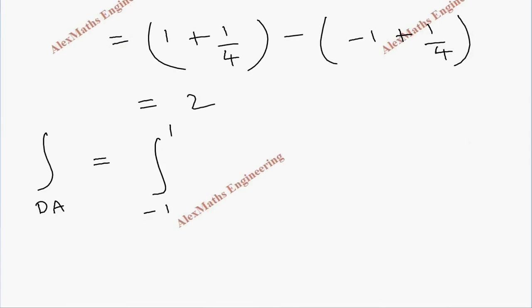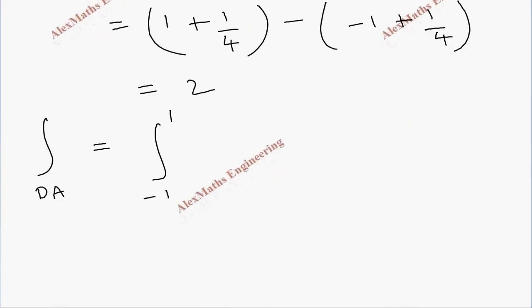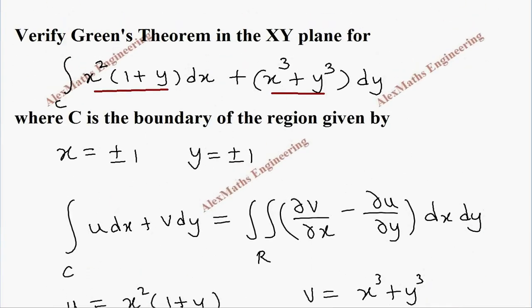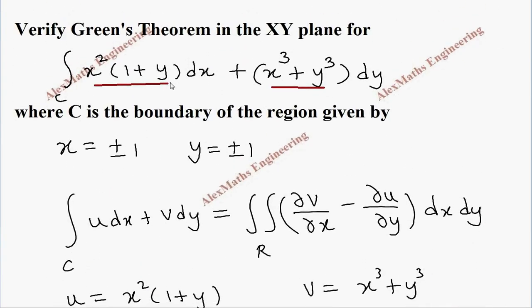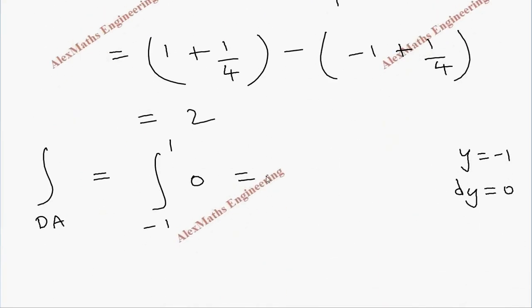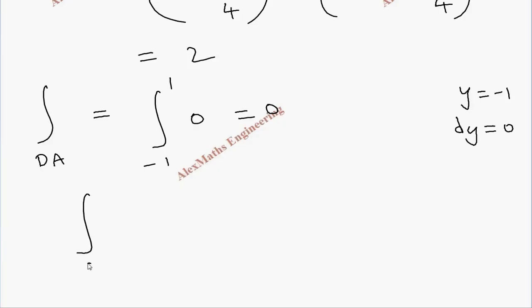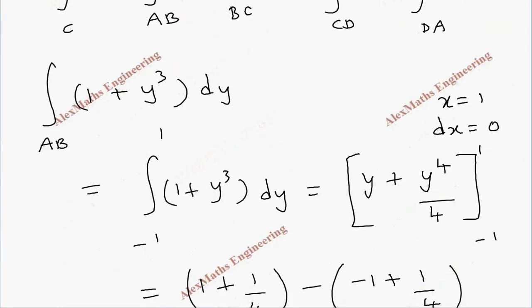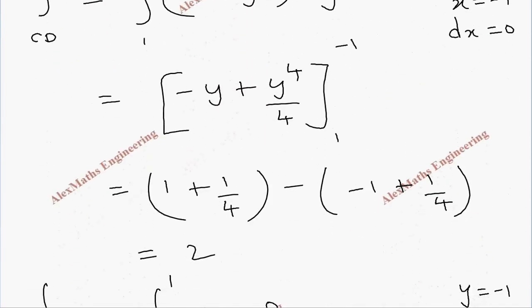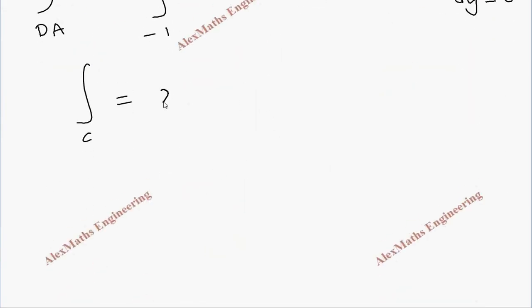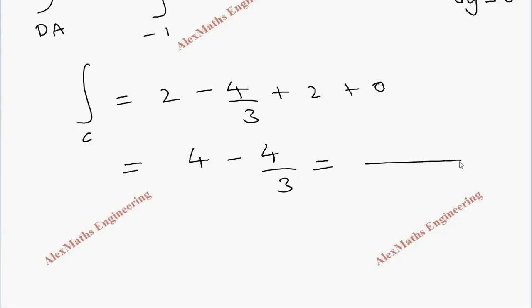For path DA, y = −1 so dy = 0, and the integrand reduces to 0. The integral over DA equals 0. Combining all parts: AB gives 2, BC gives −4/3, CD gives 2, DA gives 0. Total: 2 + 2 − 4/3 = 4 − 4/3 = (12 − 4)/3 = 8/3.